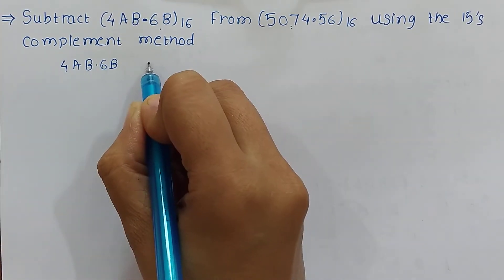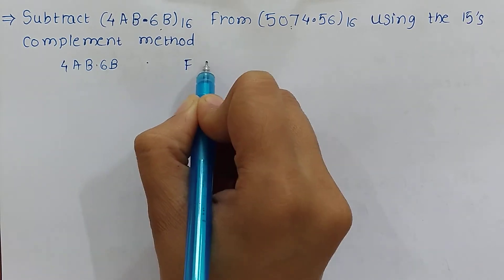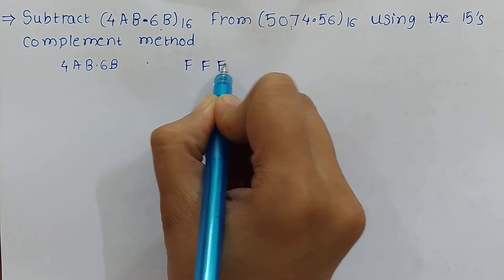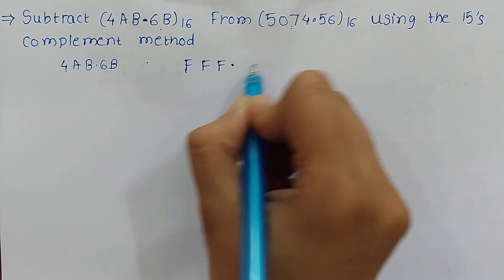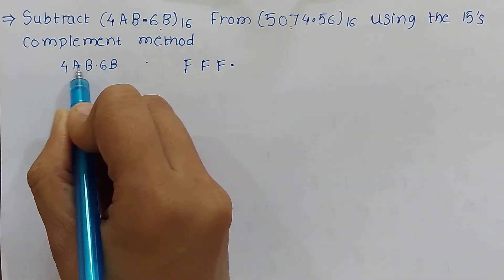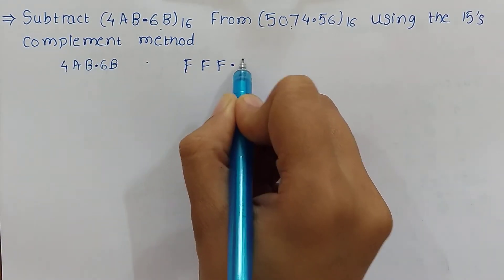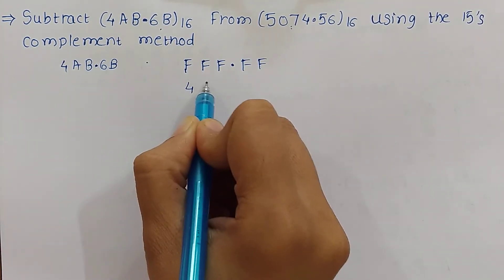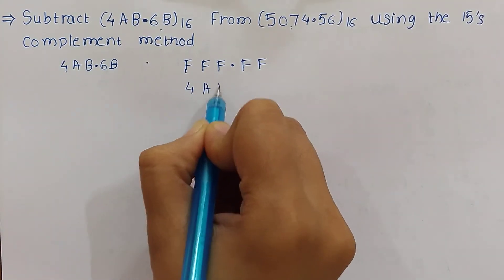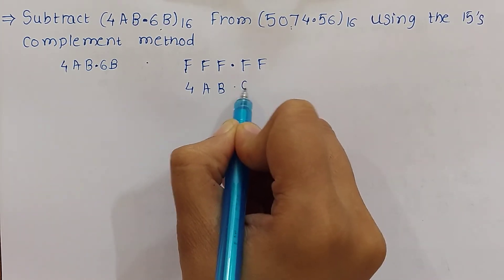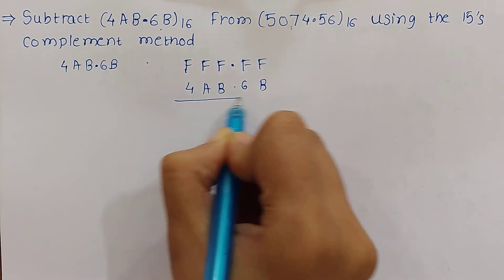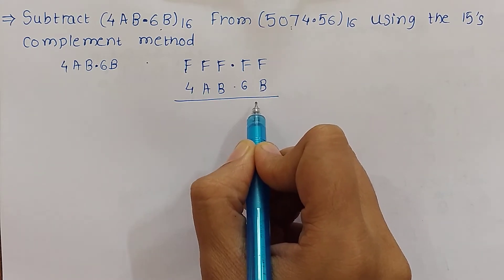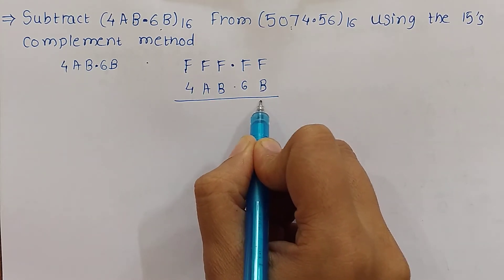To take the 15's complement, we subtract each digit from F. The number has 5 digits, so we use 5 F's. F is 15 and B is 11, so 15 minus 11 is 4.